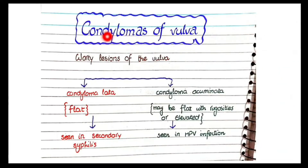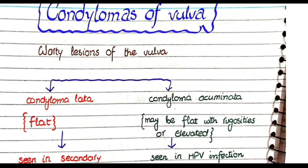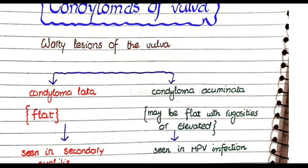In this video we will discuss about the condylomas of the vulva. Condylomas are the wartiliens of the vulva. The vulva is the part of the female reproductive tract that is externally visible, and wartiliens means skin-colored bumps that appear on the surface of skin.